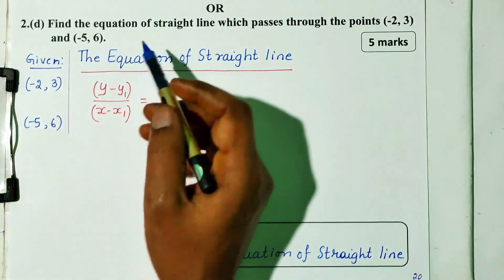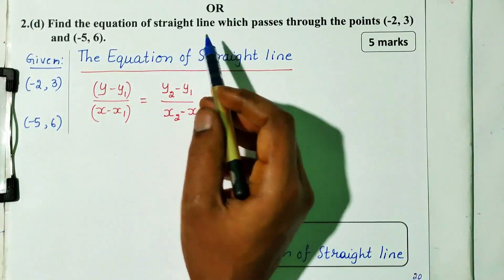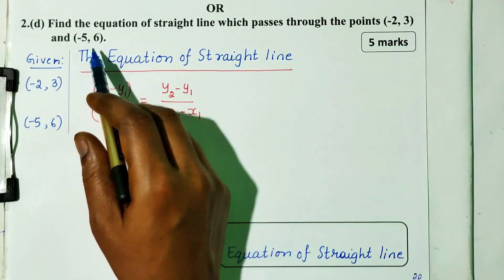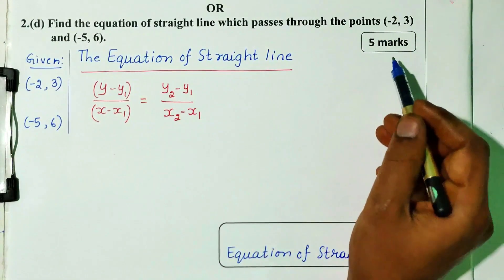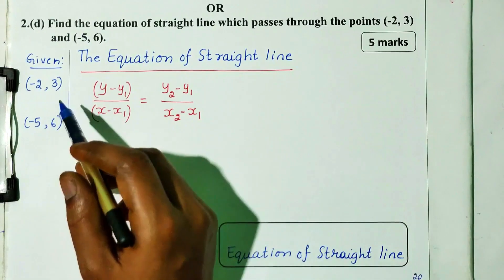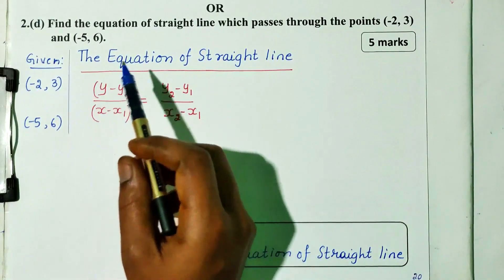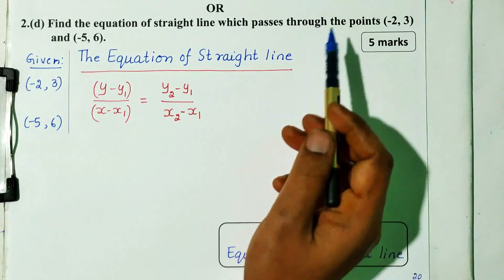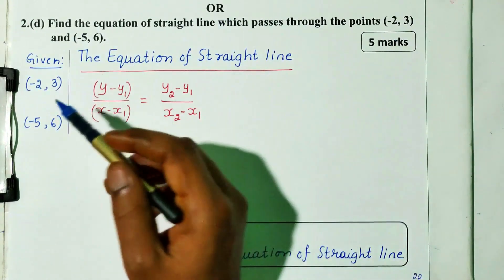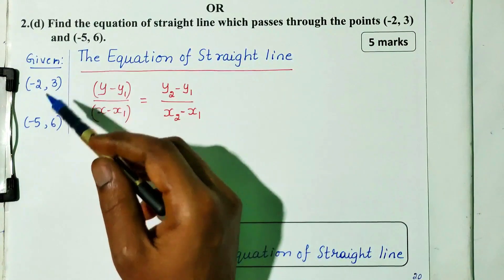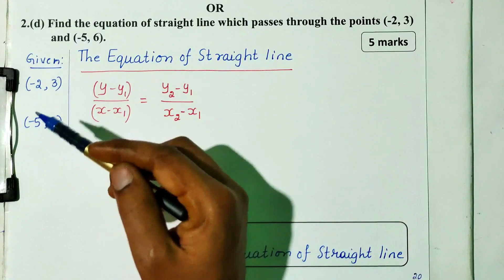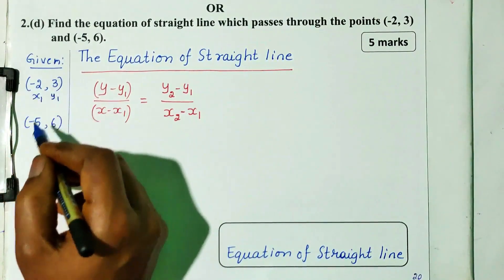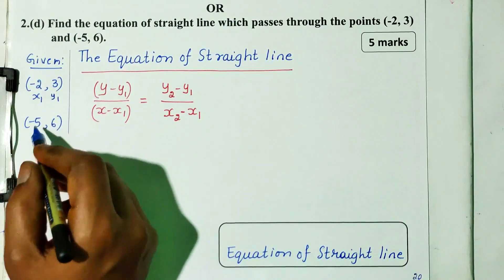Question number 2D: Find the equation of straight line which passes through the point minus 2 comma 3 and minus 5 comma 6. This is 5 marks. The first point is x1 comma y1 which is minus 2 comma 3, and the second point is x2 comma y2 which is minus 5 comma 6.